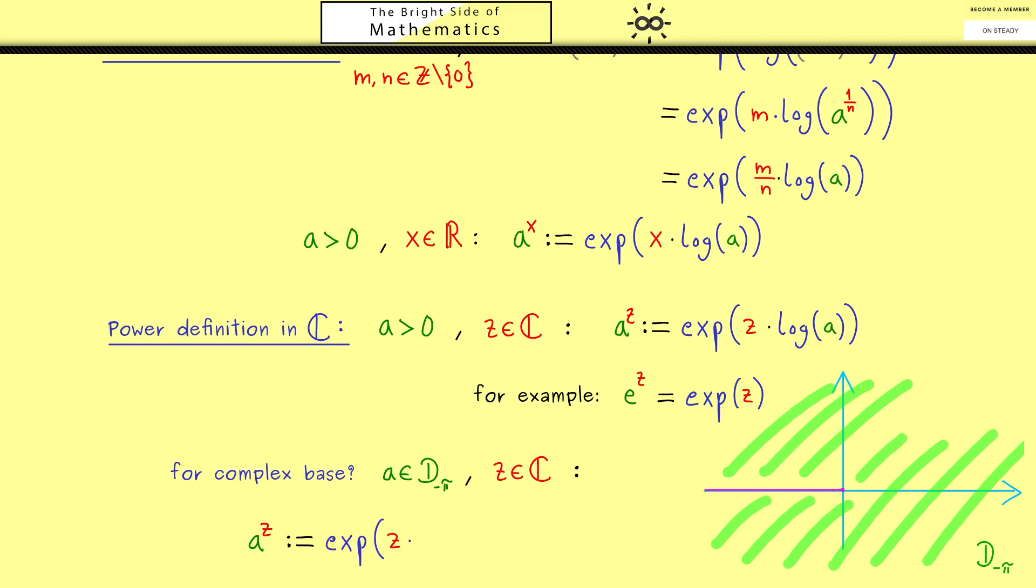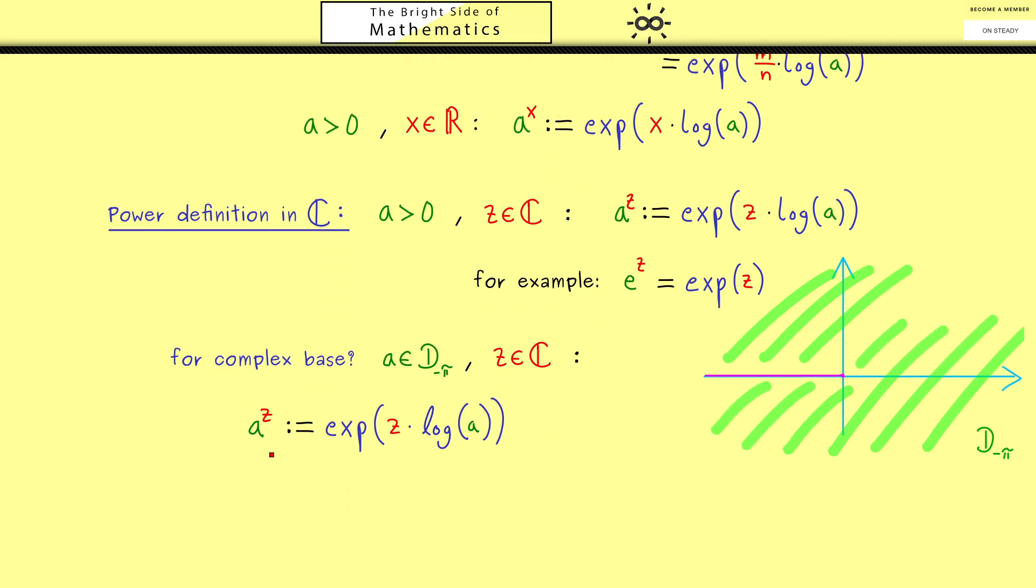As before, we have the exponential function of z times, and now the complex logarithm of a. When we agree that we take the principal value of the logarithm function, then this power is well-defined. However, then we should also speak of the principal value of the power function.